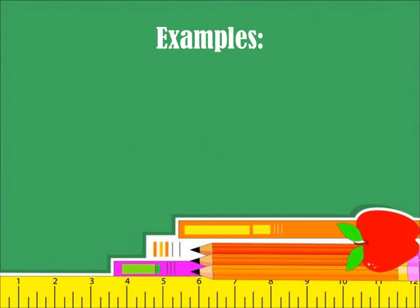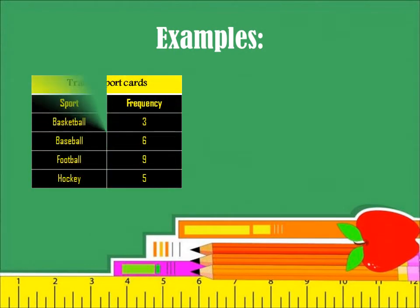Let's have an example. The table over here is called Traded Sport Cards. The sports on the table are basketball, baseball, football, and hockey. And for each sport we have a frequency. For basketball we have 3, for baseball we have 6, for football we have 9, and for hockey we have 5.